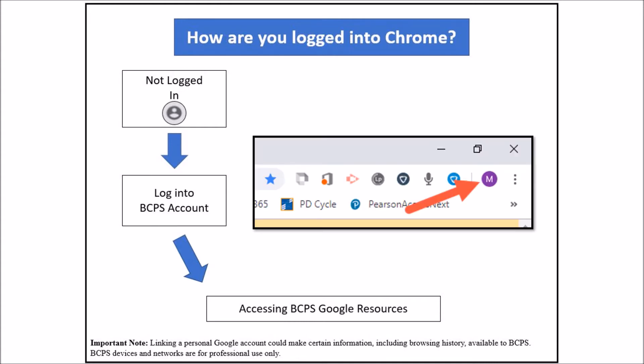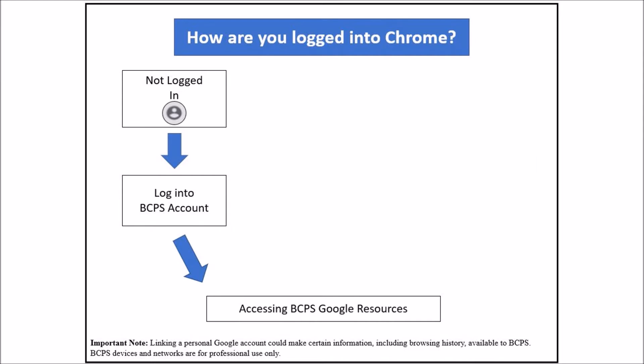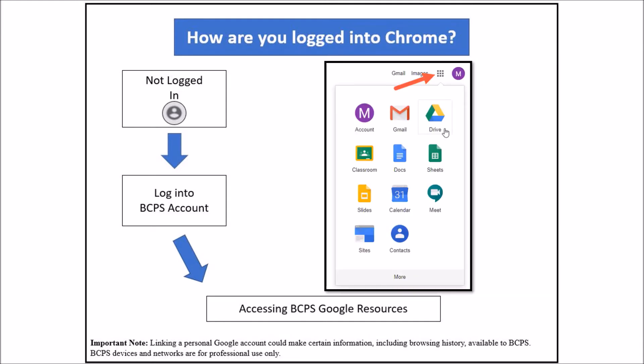When you are completely signed into Chrome with your BCPS Google account, you will see an icon with your first initial to indicate that your BCPS account is connected. You can now access available Google tools and resources by opening Chrome, going to www.google.com, and clicking on the launcher icon to reveal the available Google resources.